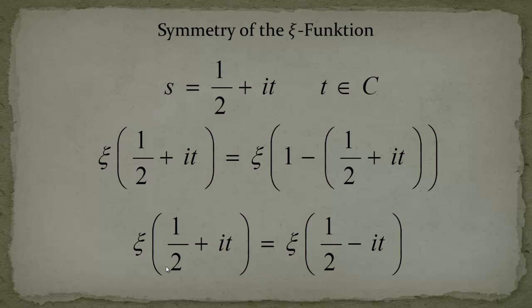And you see somehow here an it while in the general case this t should be equal to some complex number. But if you want to observe the zeros of the zeta function which are actually almost the same as for the xi function, then you will see that all these values of t are real.